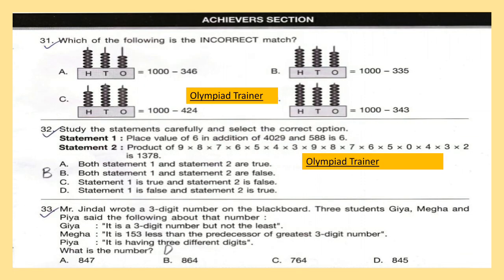Now comes the Achievers Section, where each question carries 2 marks. Question 31: Which of the following is the incorrect match? Look at the options carefully.